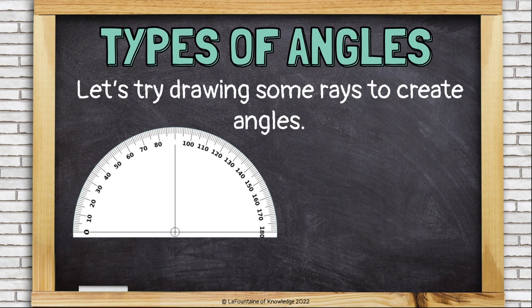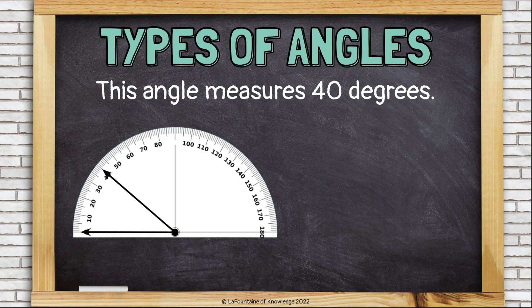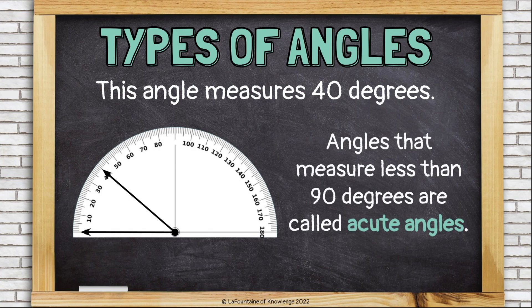Let's try drawing some rays to create angles on this protractor. This angle measures 40 degrees. Angles that measure less than 90 degrees are called acute angles. This one measures 40, so this is an acute angle.